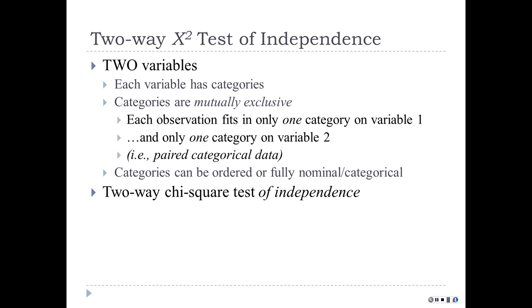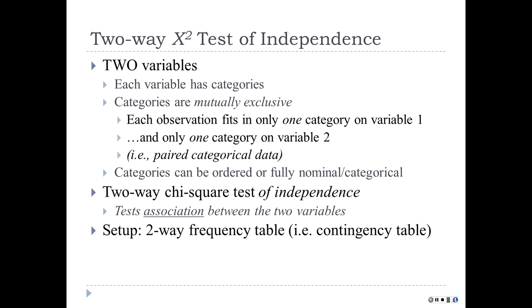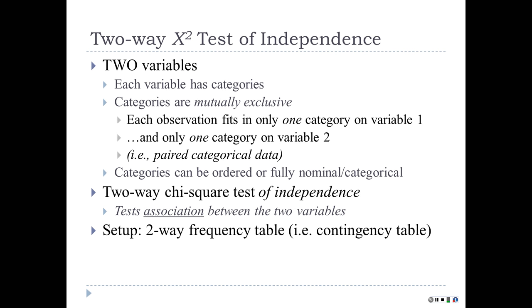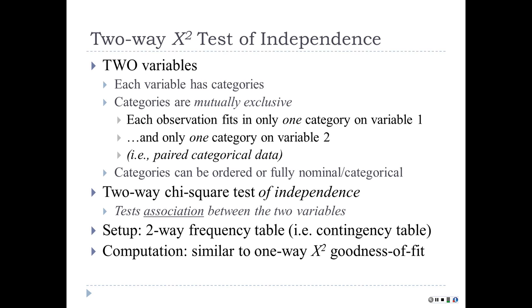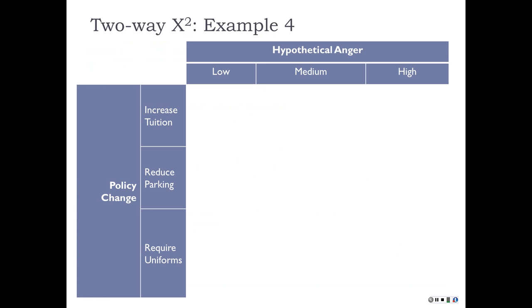This is sometimes called the Two-Way Chi-Square Test of Independence because the null hypothesis is independence of the two variables. The alternative hypothesis is that the two variables are associated. The very first thing we do is set up a two-way frequency table—a contingency table between the two variables. The computation is similar to the one-way chi-square goodness of fit, but the interpretation and null hypothesis setup are different.